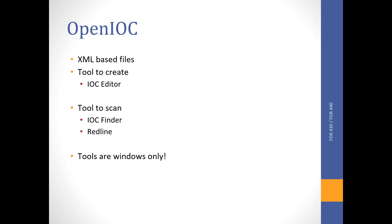In our case we will only be covering YARA, but at least have an idea about OpenIOC. OpenIOC is an XML-based file — it's a basic text file using tags. You can use a tool called IOC Editor, available on Mandiant's website, to create it. Since it's XML-based, you can also use any text editor. For scanning, you can use IOC Finder or Redline, though unfortunately those are Windows-only tools.